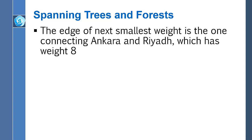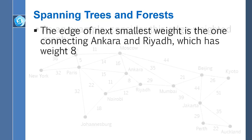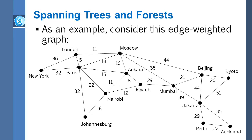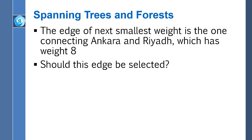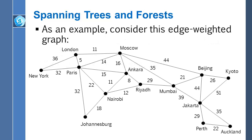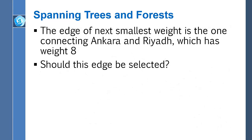Next, we look at the least weight edge among unselected edges, which is the edge of weight eight connecting Ankara and Riyadh. The question is, should we add this edge? It has the least weight, and does it connect two cities already in the same connected component? The answer is no — they are in different connected components. Right now the subgraph has only one edge, Paris to London. Paris and London are in the same component; everything else is in its own component. So we can safely select this edge as well.